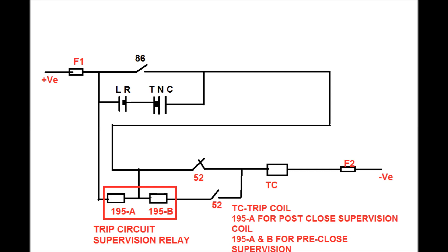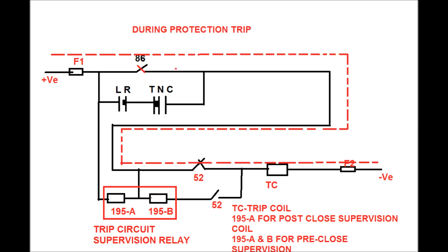Now how the trip coil energized is shown in this figure by red dotted line. A protection trip operated by means of 86 and then the trip coil is energized as shown in this figure by red dotted line.